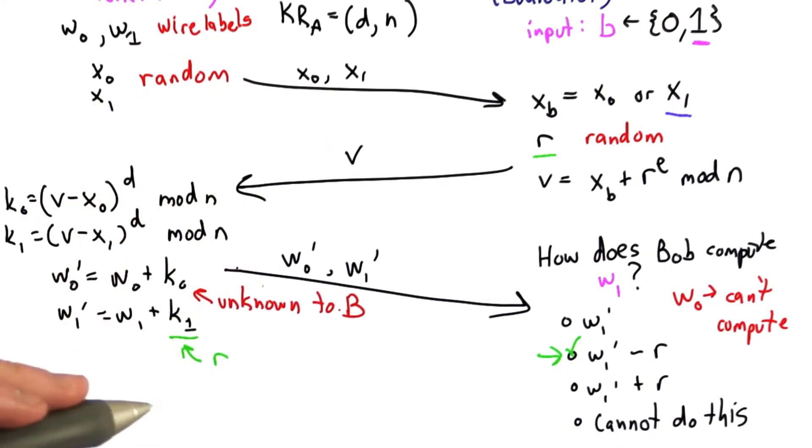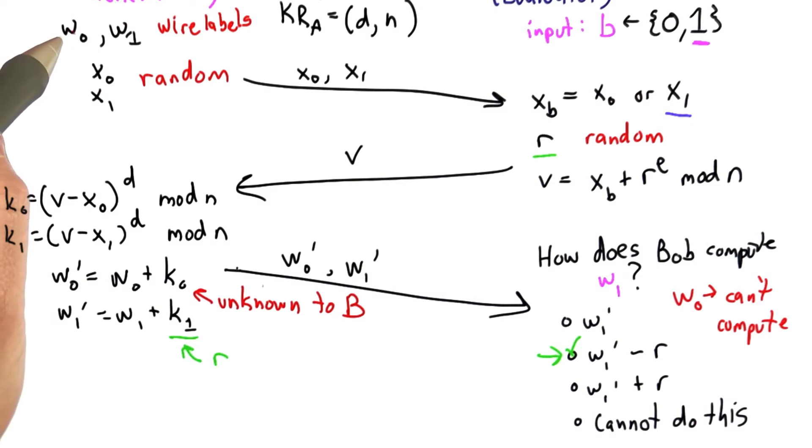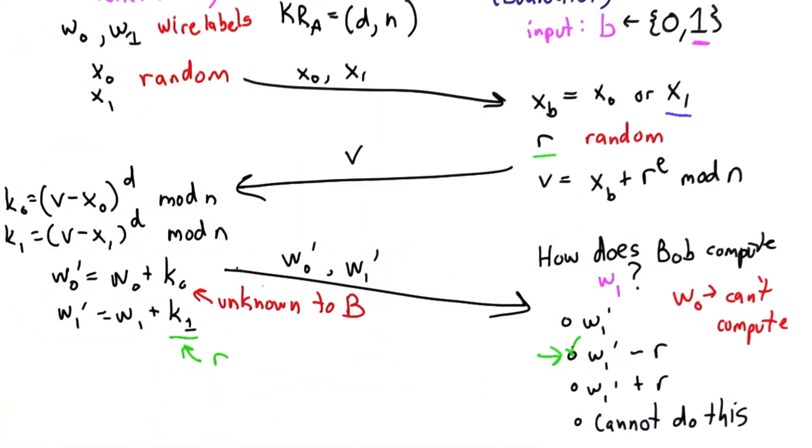This provides the property we were looking for: Bob can select one of the two wire label values Alice generated. Alice doesn't learn which one he selected, and Bob doesn't learn anything about the other one.